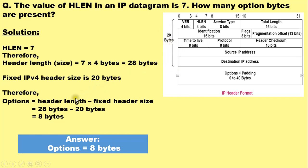So the options will be equal to the header length minus the fixed header size of 20 bytes. IPv4 has a fixed header size of 20 bytes. Therefore the options will be equal to the header length minus the fixed header size. We have determined the header length as 28 bytes and the fixed header size is 20 bytes. So 28 minus 20 is equal to 8 bytes.